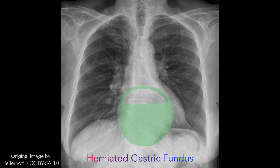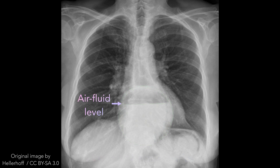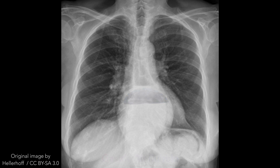Hiatal hernia usually presents radiographically as a well-defined, rounded, retrocardiac opacity with an air-fluid level. In many cases of hiatal hernia, there will not be an air bubble below the left hemi-diaphragm. This is a relatively expected finding, considering that the stomach is no longer in its usual position.